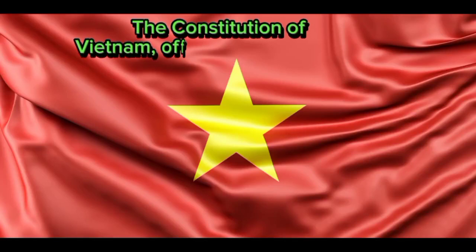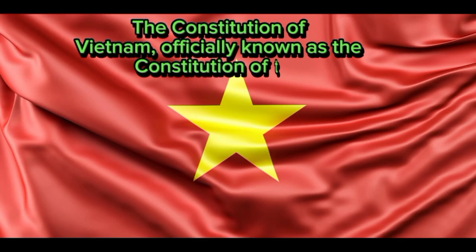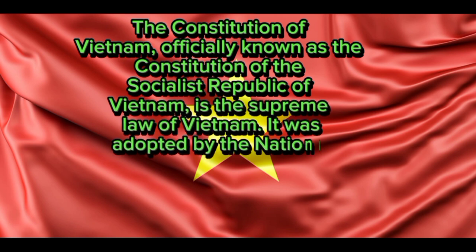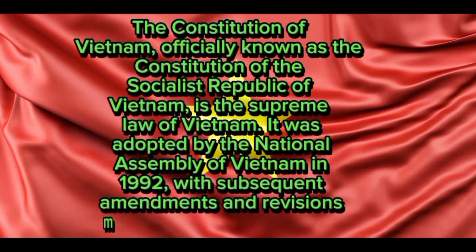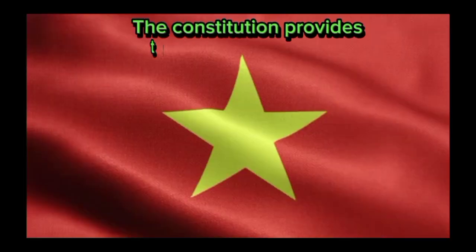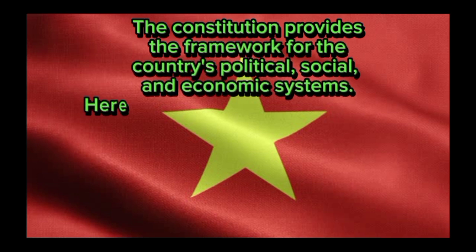The Constitution of Vietnam, officially known as the Constitution of the Socialist Republic of Vietnam, is the supreme law of Vietnam. It was adopted by the National Assembly of Vietnam in 1992, with subsequent amendments and revisions made in subsequent years. The Constitution provides the framework for the country's political, social, and economic systems.